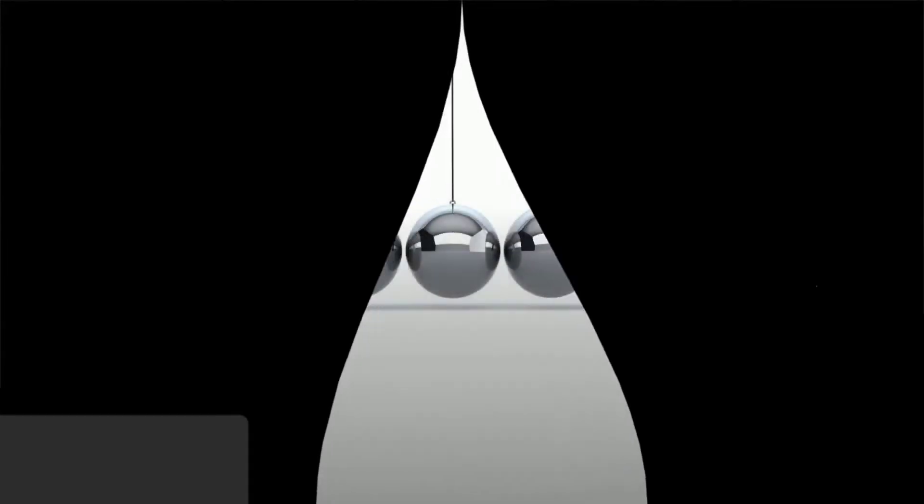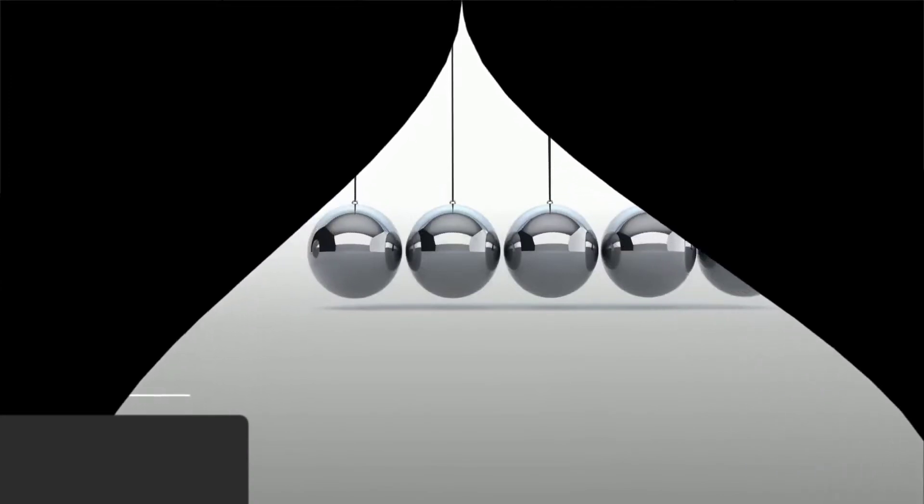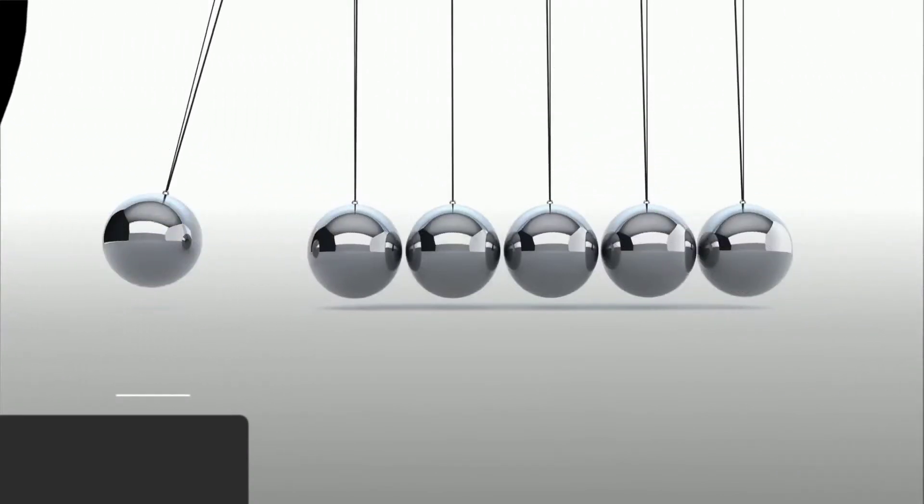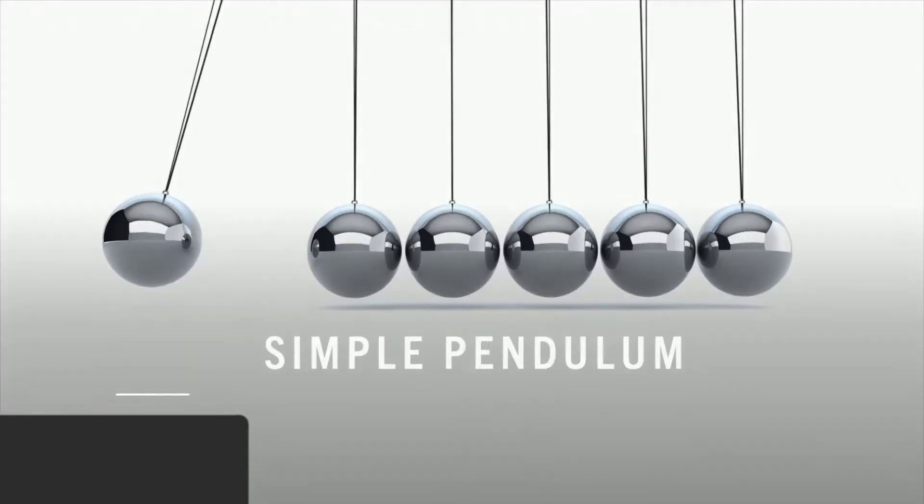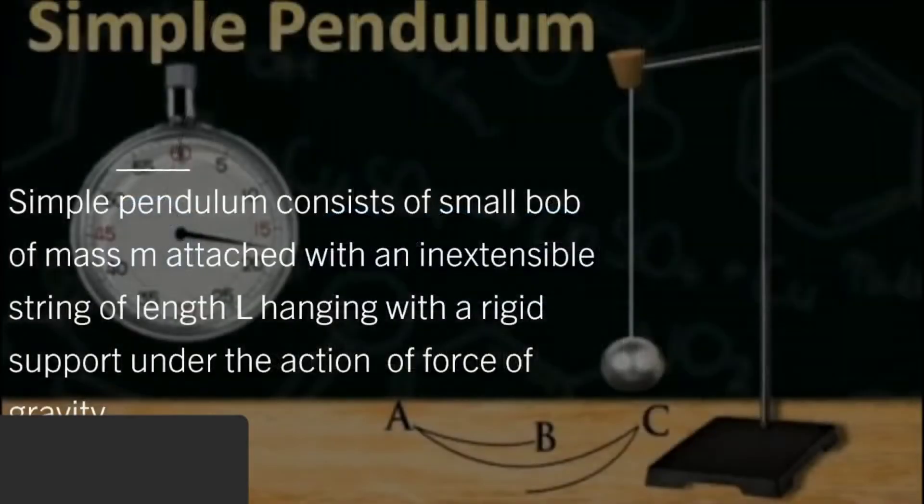Hi everyone, today our topic is simple pendulum. A simple pendulum consists of a small bob of mass m attached with an inextensible string of length L, hanging with a rigid support under the action of force of gravity.